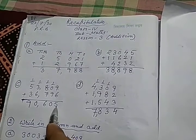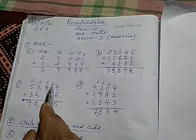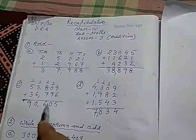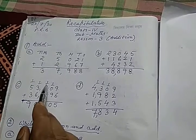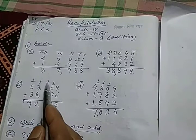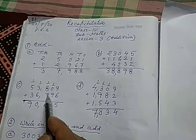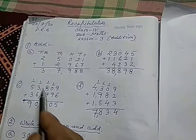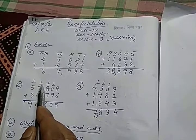We have written here 5 and 1 is carry. 1 is added to 9, then it is 10. 0 is written here and again 1 is carry. 8, 1, 9, 9 and 7 is 16. 6 is written and 1 is carry here.